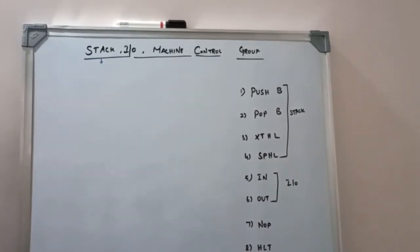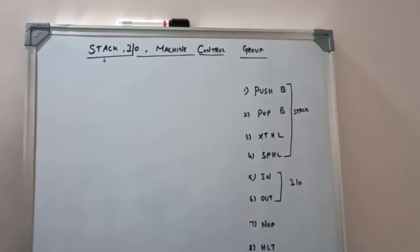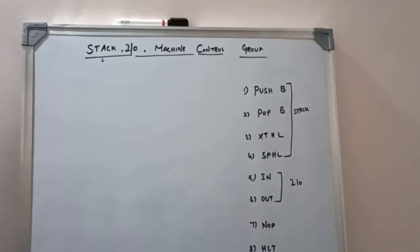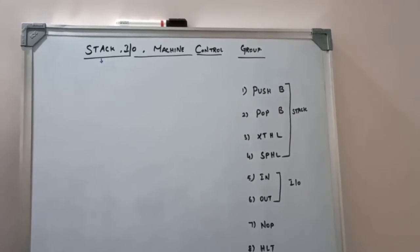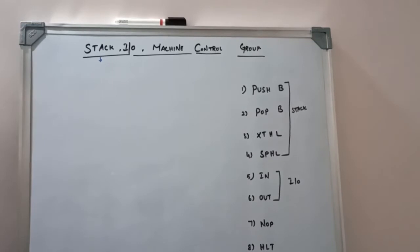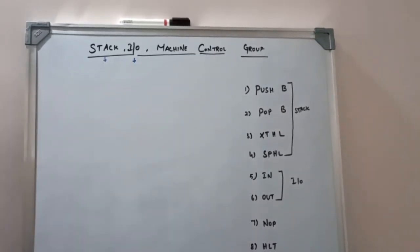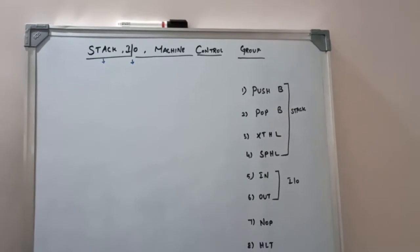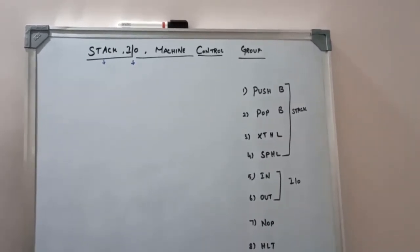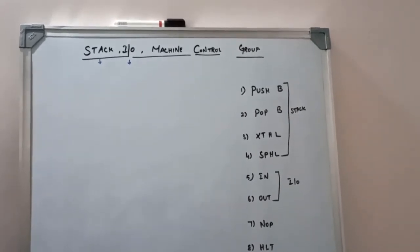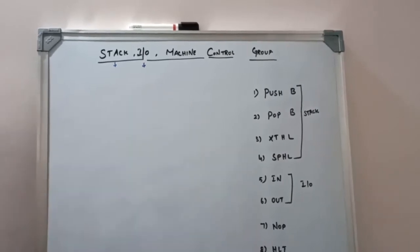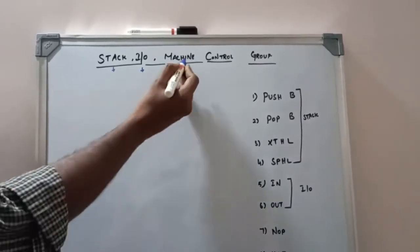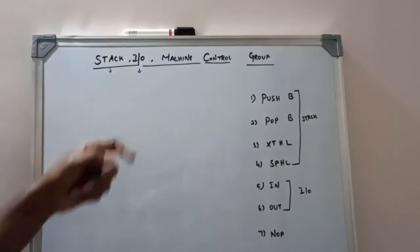In the Stack function, you are transferring data from a specified register to the stack pointer, or from the stack pointer to a specified register — just transferring content between two registers. For I/O function, based on the port value, you get data from outside to inside the microprocessor, or the result stored in the accumulator is passed to the outside. Machine control instructions control the machine operations.